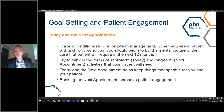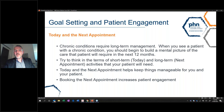When you see a patient with a chronic condition, begin to build a mental picture of the care that patient will require in the next 12 months. Think in terms of short-term — today — and long-term — the next appointment — whether that be three months, six months, or 12 months, and the activities your patient will need to achieve in that timeframe. The today-and-next-appointment principle helps keep things manageable for you and your patients so they don't feel overwhelmed and become disengaged.